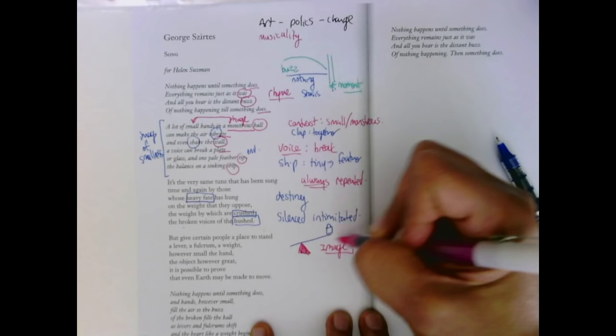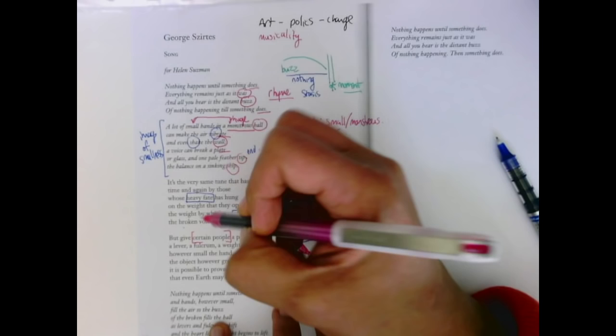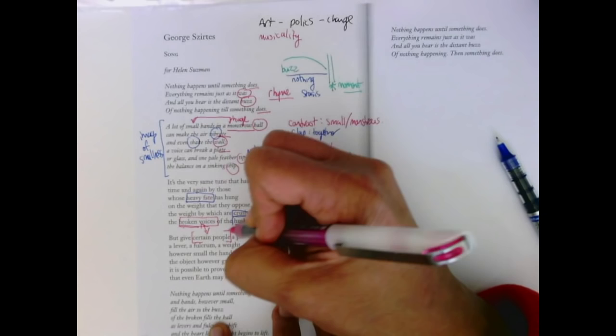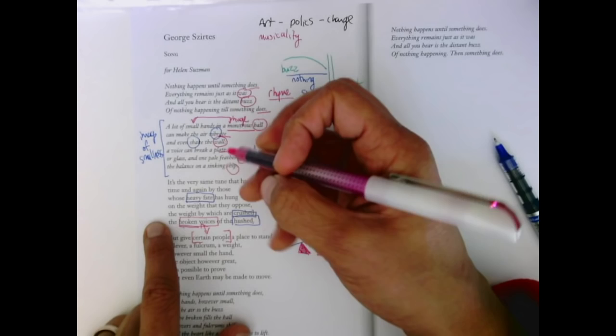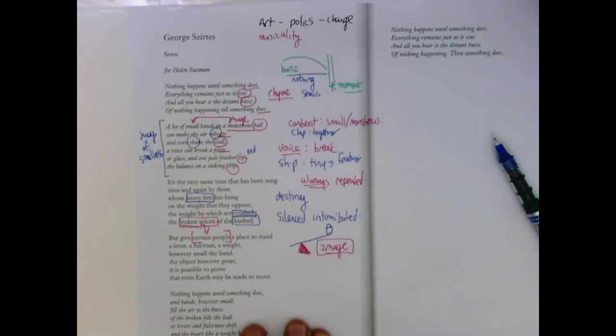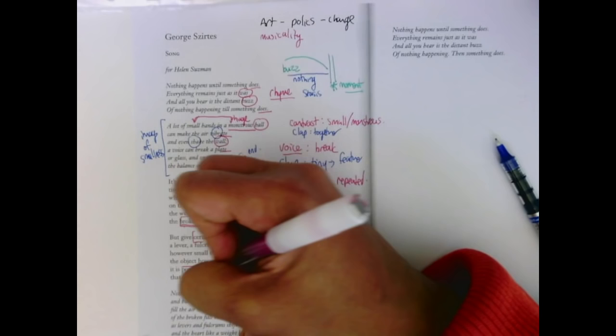What's interesting is certain people. I don't understand what these certain people are with broken voices. That has just occurred to me. These are the oppressed. These are the people who are silenced, crushed, hushed, broken. If we give them a place, a lever, a fulcrum, and a weight, no matter how big what it is that we're fighting, you can move the earth.